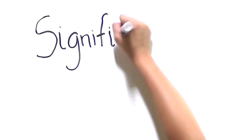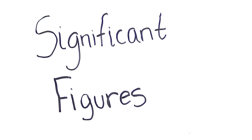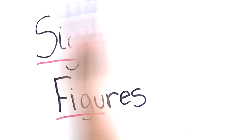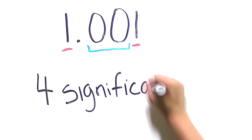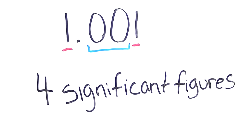In school, we're taught about significant figures and how to use them. Significant figures are all non-zero digits. Zeros count if they're in between two non-zero digits, like the two zeros in 1.001.